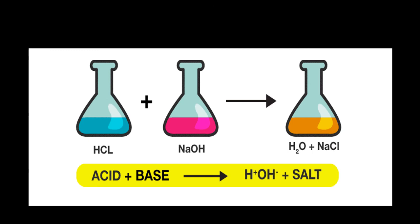Now this is the chemical equation: hydrochloric acid reacts with sodium hydroxide solution to give sodium chloride and water. We need this equation because to find the molarity of HCl we need the number of moles, and the number of moles comes from the chemical equation. From the equation, the number of moles of HCl is 1 and of NaOH is also 1.